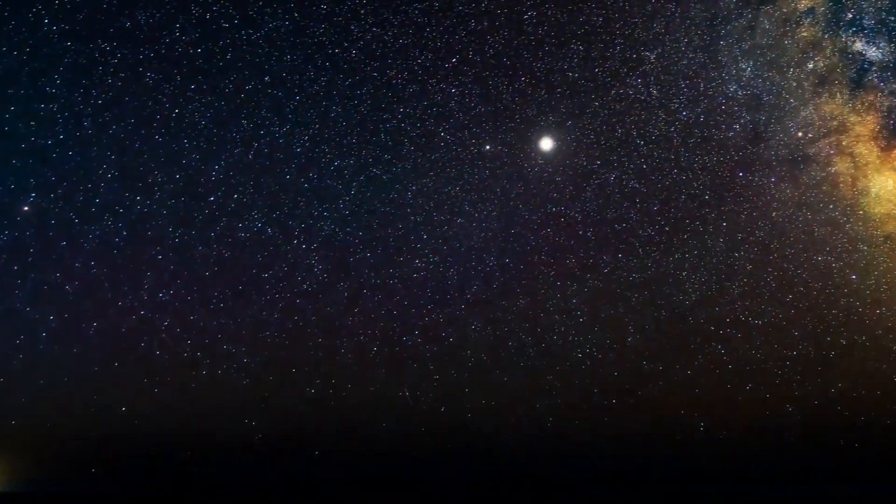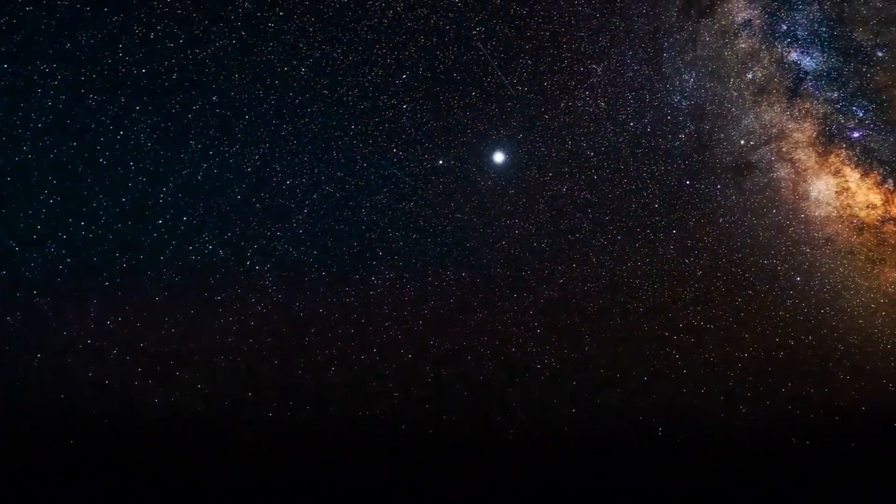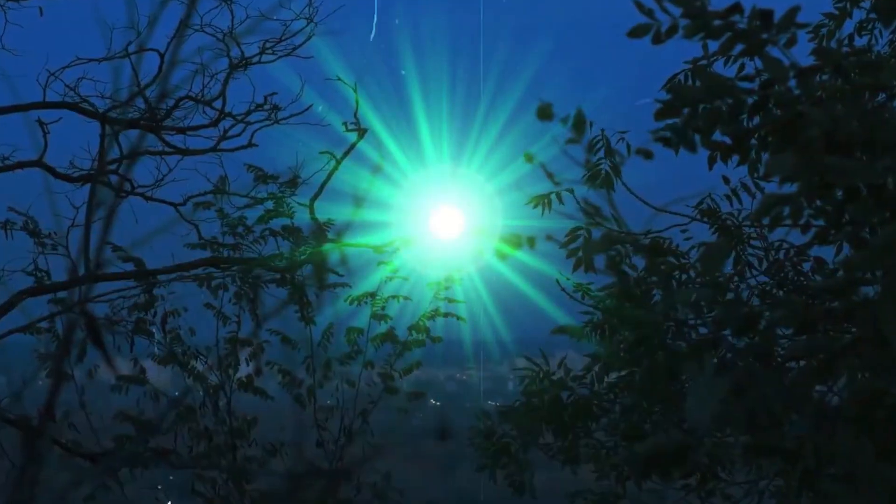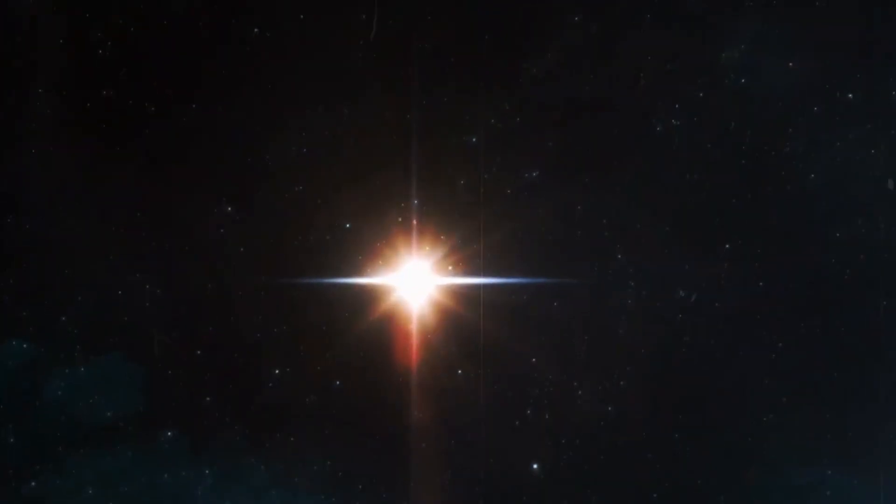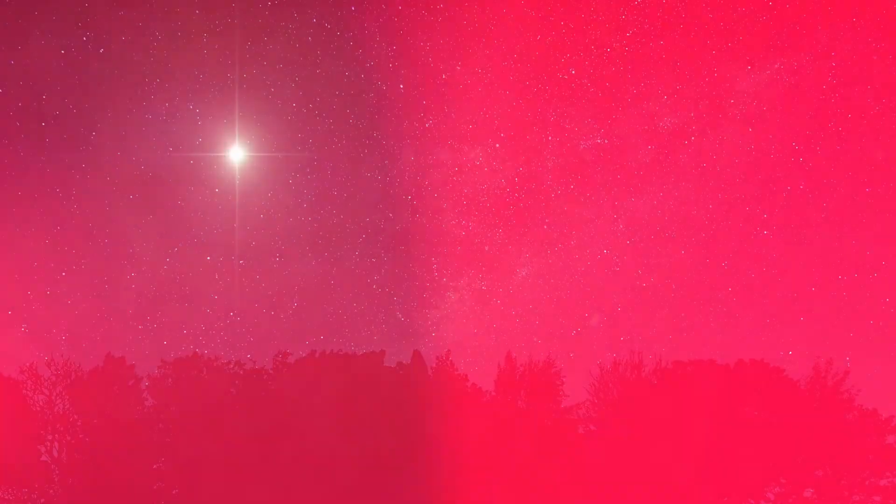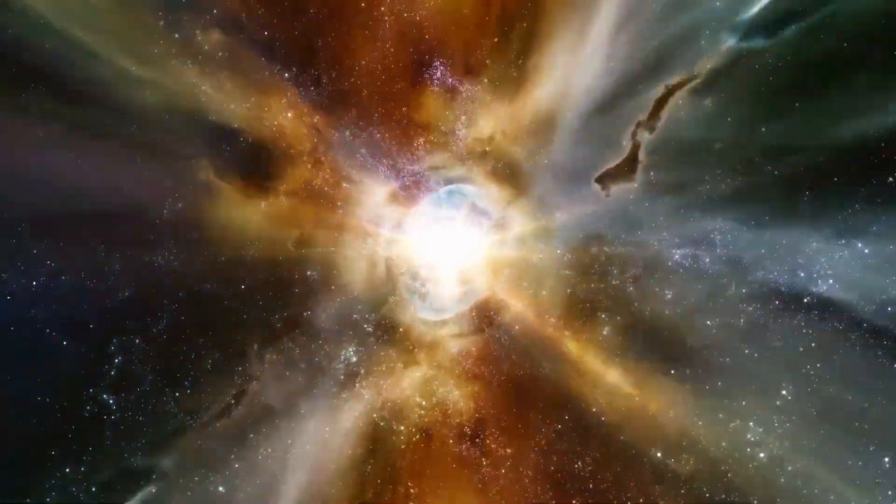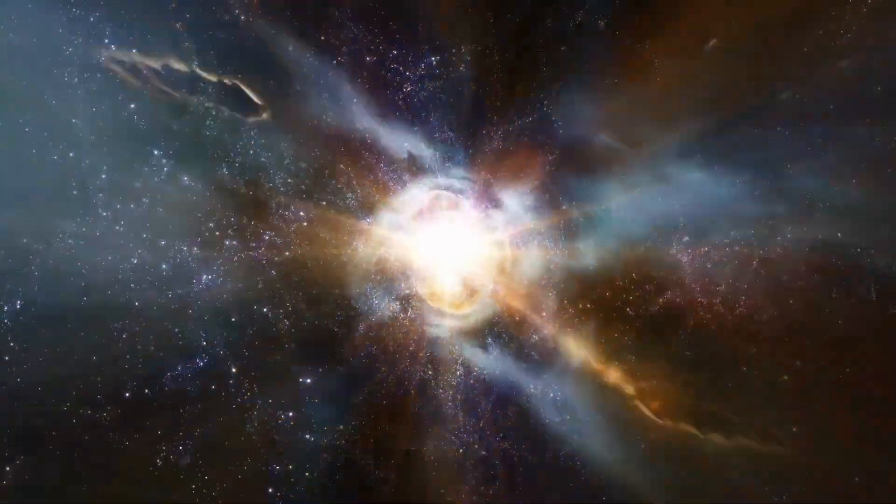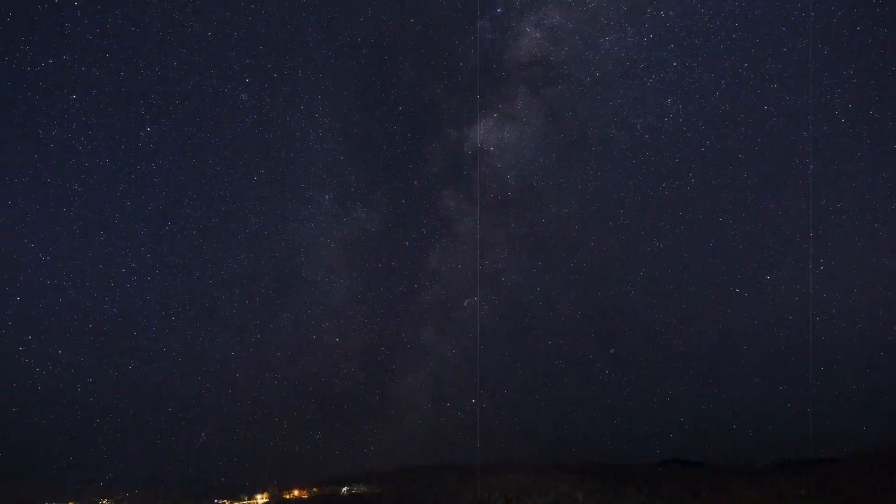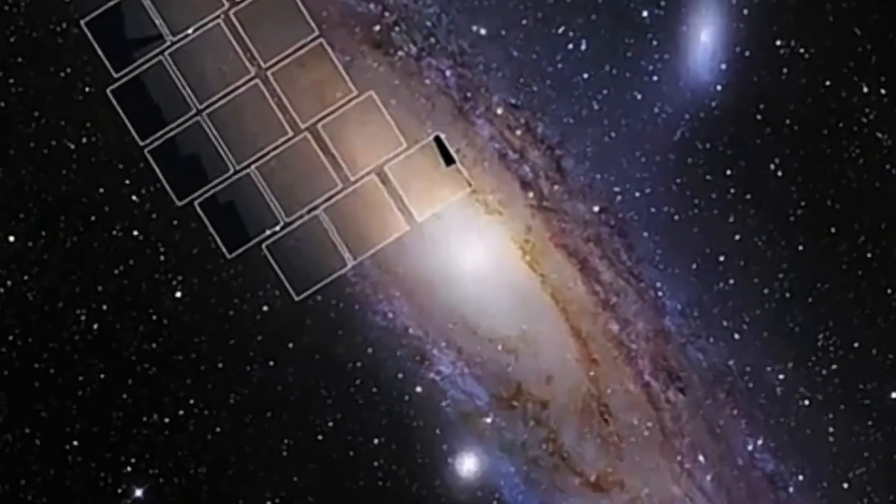Betelgeuse was not alone, the young star was formed in a cosmic nursery full of newborn stars. This luminous and chaotic region may have resembled today's Orion Nebula. The environment of the star nursery was characterized by strong winds and high UV radiation.